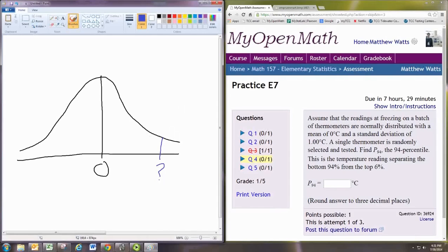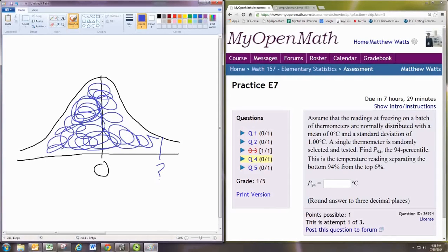What you know is that the area here below it, the probability of being less than that or the percentage less than that, that is 94%. Of course, that leaves 6% to the right of it.